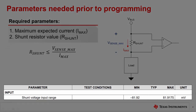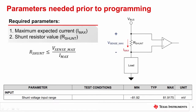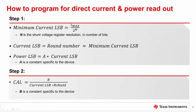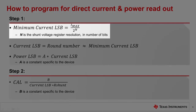Here is a snapshot of the INA233 datasheet that shows the VSENS maximum and minimum limit. There are a few additional considerations in selecting an appropriate shunt resistor, which is covered in another video in this series. Once we know the maximum expected current and shunt resistor value, programming the device is a simple two-step process. Step one is to compute the minimum current least significant bit, or LSB, for the application. This is calculated as the maximum expected current divided by 2 to the power of n, where n is the resolution of the current register in number of bits.